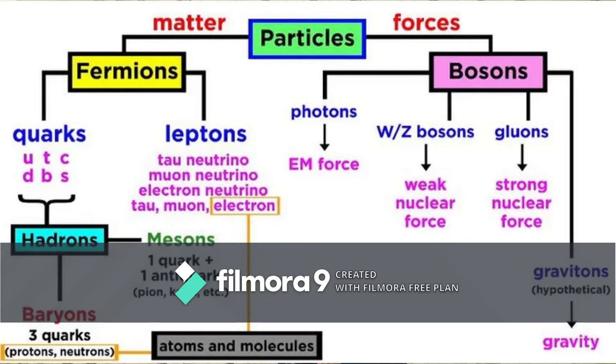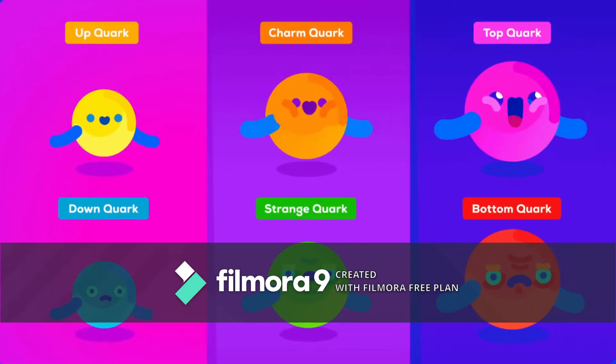Coming to fermions. Fermions can be divided into two categories: quarks and leptons. Quarks have six types: up quark, down quark, charm quark, strange quark, top quark, and bottom quark.